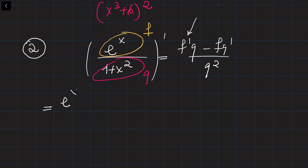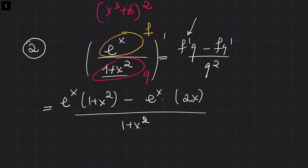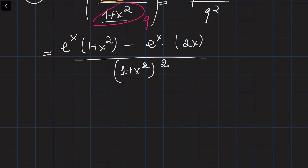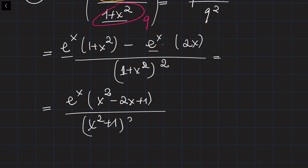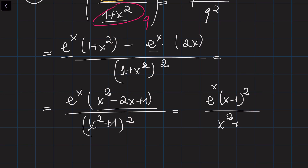The derivative of f is eˣ, multiplied by g which is (1 + x²), minus f which is eˣ, multiplied by g' which is simply 2x. This is all divided by (1 + x²) squared. We can factor out eˣ from both terms in the numerator, leaving (x² − 2x + 1) divided by (x² + 1) squared. Note that x² − 2x + 1 can be written as (x − 1)². So the final answer is eˣ(x − 1)² divided by (x² + 1) squared.